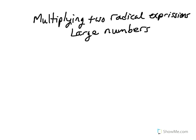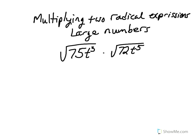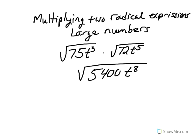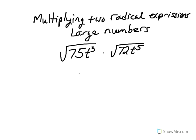We will now look at multiplying two radical expressions that have large numbers. We could follow exactly the same procedure as we did before and multiply the two radicals together. However, that would give us 5,400t to the 8th, which is a rather large number to be reducing the radical. Instead, there is an alternative: reduce the two radicals first, then multiply the answers.